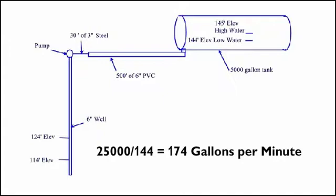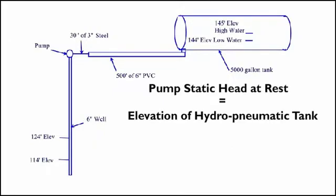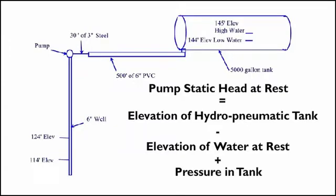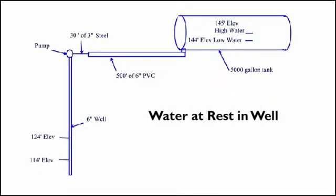To calculate the pump static head at rest, you have to subtract the elevation in which the water is at rest from the elevation of the hydropneumatic tank and then add the pressure in the tank. In this example, the water is at rest in the well at an elevation of 124 feet.